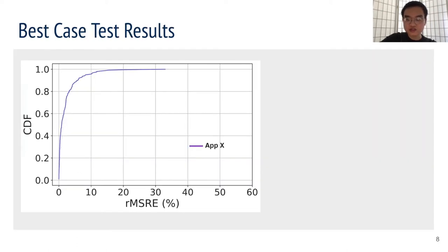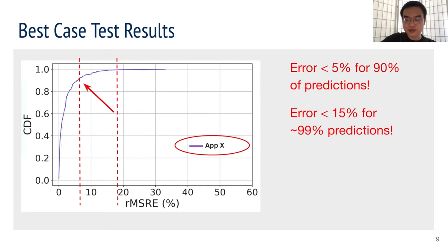So now, let's see the results. We're going to present the prediction errors as CDFs. Each line represents the prediction accuracy of an application, so as the line goes closer to the top left, the better.